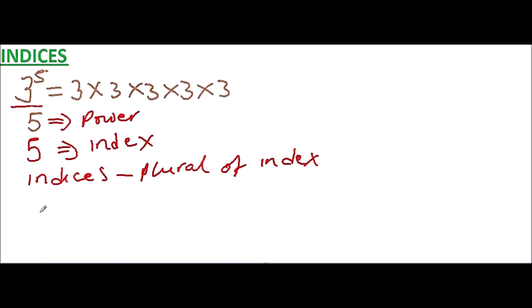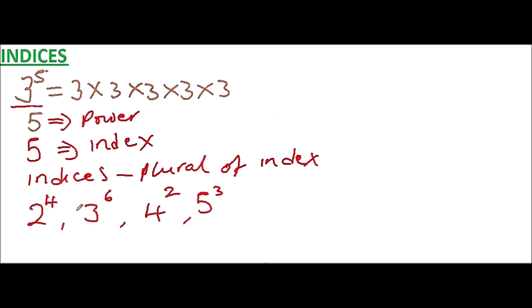Let's take an example. We may have 2 to power 4, 3 to power 6, 4 to power 2, and 5 to power 3. Here we have what we refer to as the index. So we can say 4, 6, 2, and 3 are the indices.